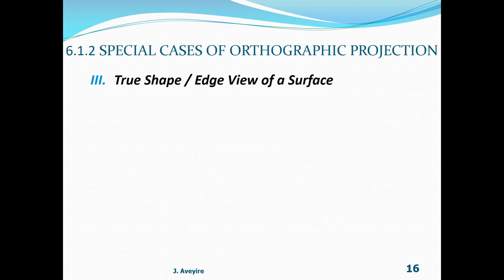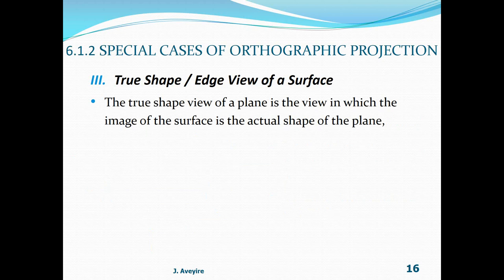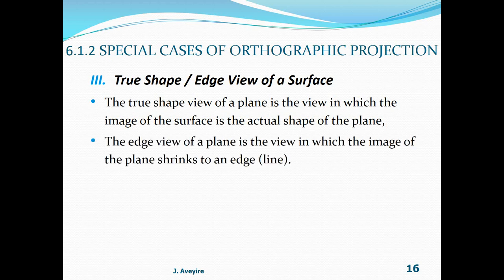True shape and edge view of a surface: the true shape view of a plane is a view in which the image of the surface is the actual shape of the surface of the plane. If drawn to a scale of 1:1, the sizes will also equal the actual lengths. The edge view of a plane is the view in which the image of the plane shrinks to an edge — a line.